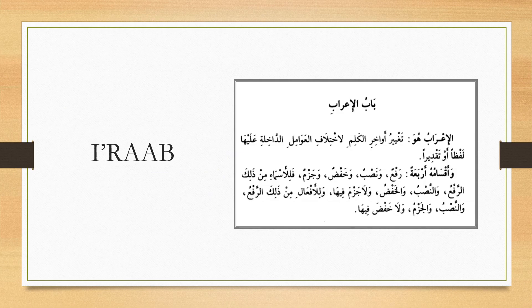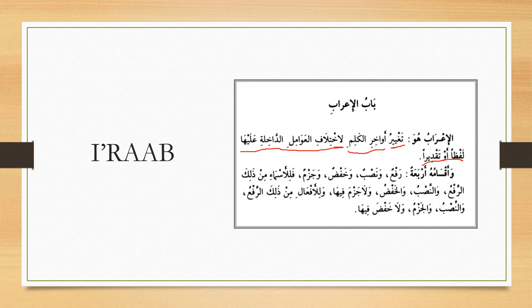Everything mentioned is summarized by the author in this chapter, where he says: باب الإعراب — الإعراب هو تغيير أواخر الكلم لاختلاف العوامل الداخلة عليها. The changing occurs at the endings of words, لفظًا أو تقديرًا — explicitly or implicitly — and the reason for the change is the differences in the factors that enter upon said word. That is the definition of al-I'raab.